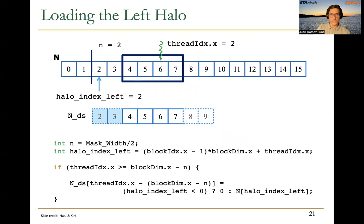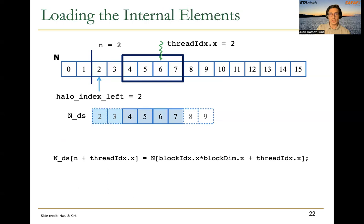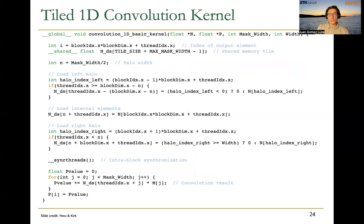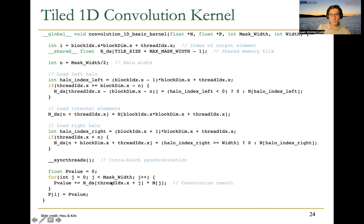I will leave the loading details here for your own study. This slide covers loading the left halo into shared memory, the internal elements of the tile, and the right halo. Here is the entire kernel for the tiled 1D convolution. First, we obtain the index of the output element based on block ID, block dimensions, and thread ID. Then we declare the shared memory tile, load the left halo, load the internal elements, load the right halo, and synchronize to ensure the entire tile is in shared memory. After that, we calculate the convolutional result using the data in shared memory and the mask, which will likely be in the constant memory.